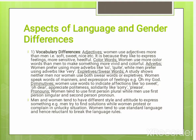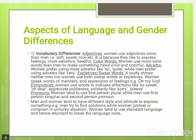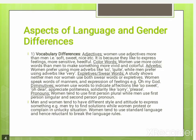Now we are going to study the different aspects of language and the related gender differences. First is vocabulary differences. The first point is the use of adjectives — women use adjectives more than men. The particular type of adjectives used by women include words like 'soft,' 'sweet,' 'nice,' etc. This is because they like to express feelings, as they are more sensitive by nature and more attentive.